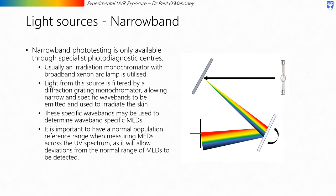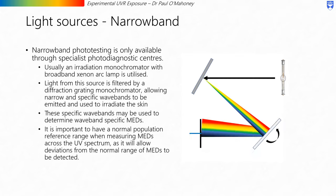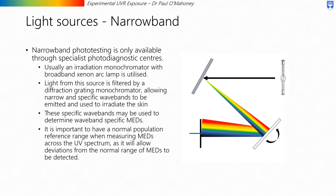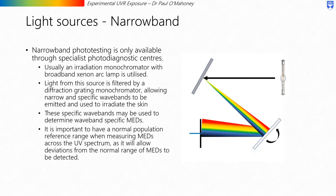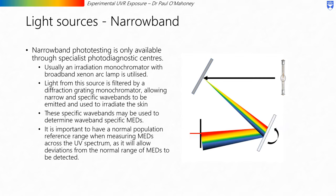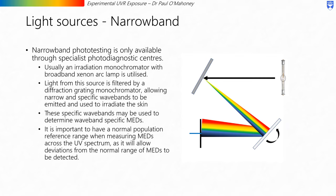When considering light sources, one type is a narrowband light source. Narrowband phototesting is typically only available through specialist photodiagnostic centres and is usually carried out using an irradiation monochromator. Light from a broadband xenon arc lamp is filtered by a diffraction grating monochromator, allowing narrow and specific wavebands to be emitted and used to irradiate the skin. These specific wavebands may then be used to determine waveband-specific MEDs. It is important to have a normal population reference range when measuring MEDs across the UV spectrum, as it allows deviations from the normal range to be detected.